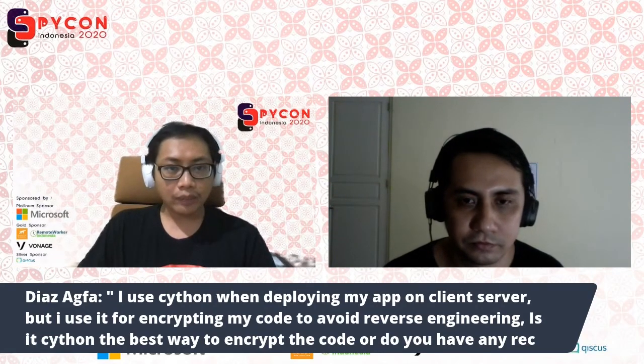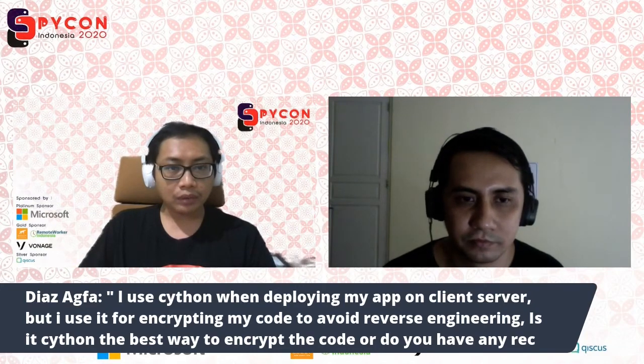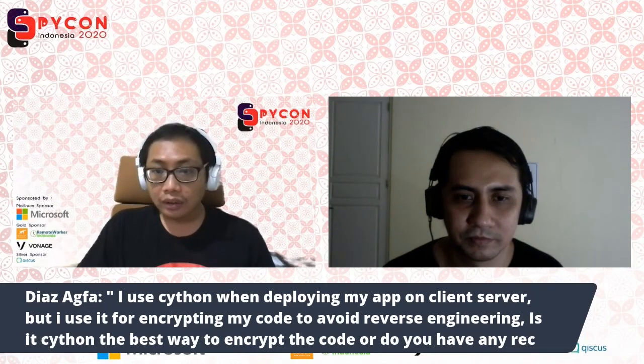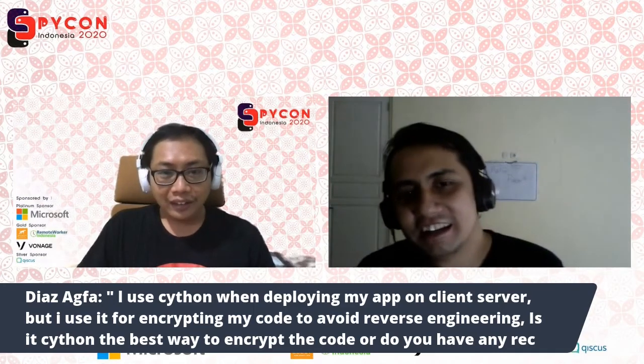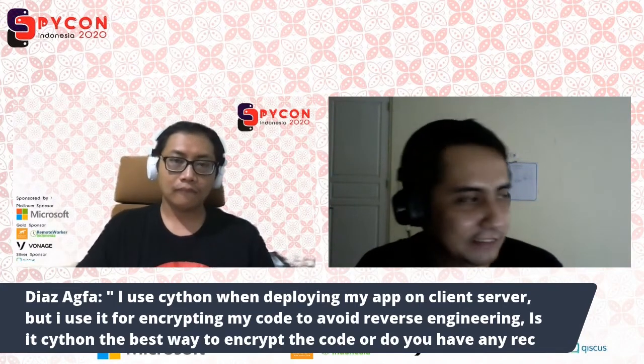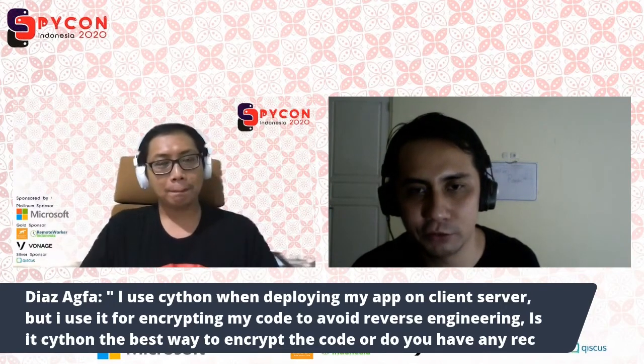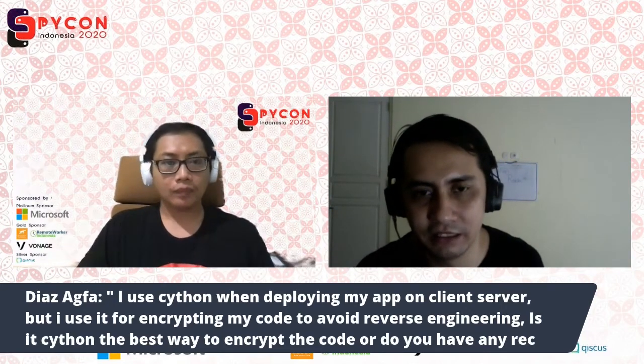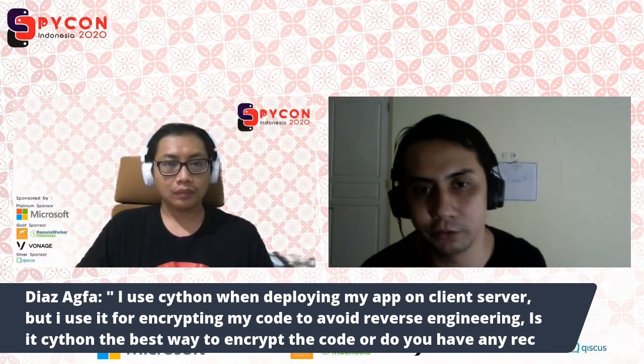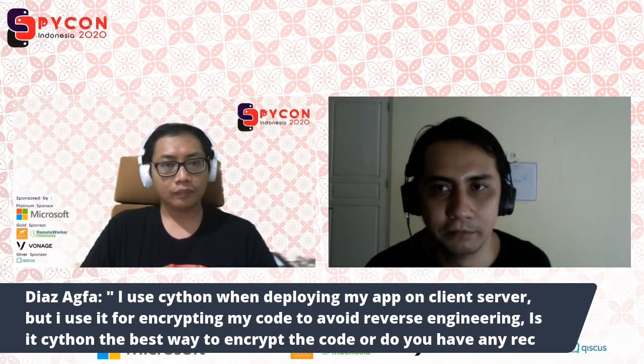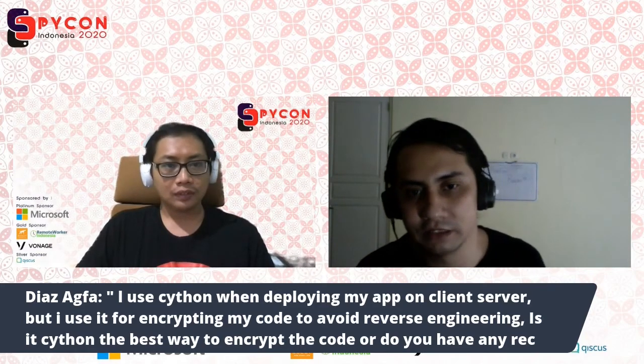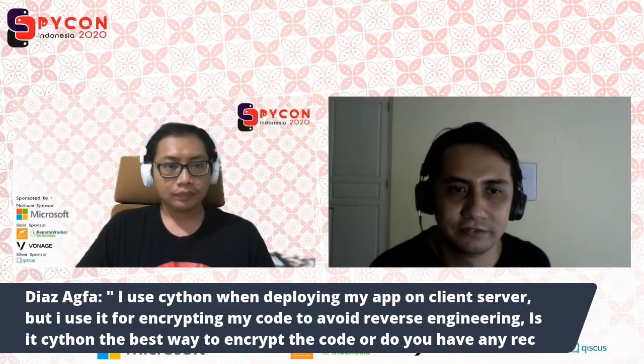I think this is the last question from I use Cython when deploying my app on client server, but I use it for encrypting my code to avoid reverse engineering. Is Cython the best way to encrypt the code or do you have any suggestions? So for encrypting code, if your client is not smart enough, then it's fine. We have the compilation tool that can break it down. But even when that happens, they can only decompile it to C. They cannot really get your source from Python. So it will be harder for them. So that's actually a good way already to start.